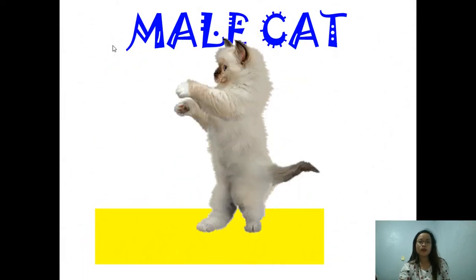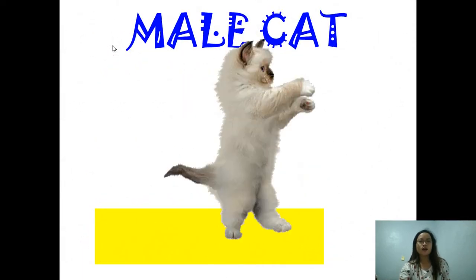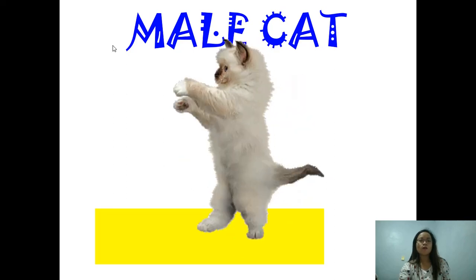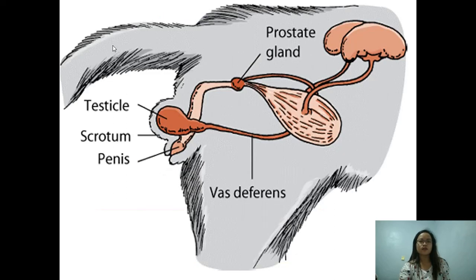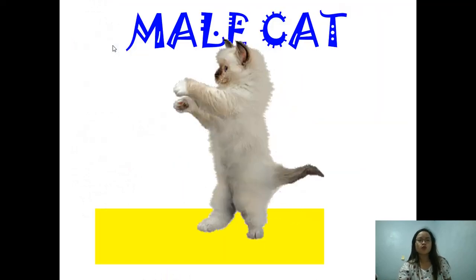The reproductive system of a male cat includes the prostate gland, the vas deferens, the penis, the scrotum, and the testicles. That covers the reproductive systems of the animals and insects we discussed today.